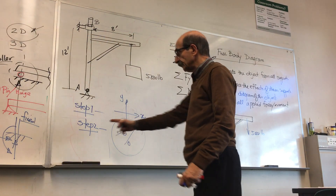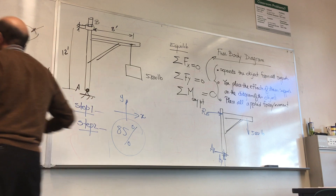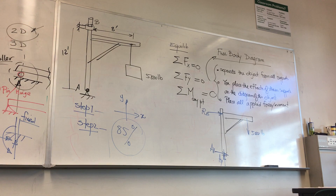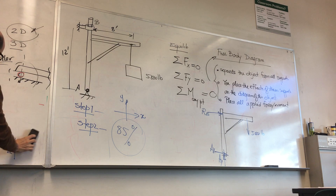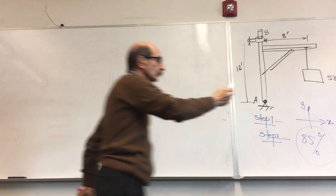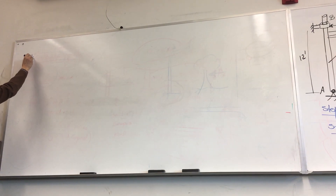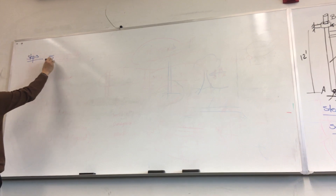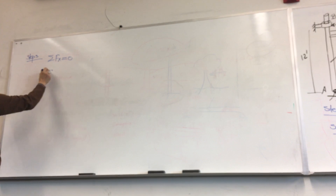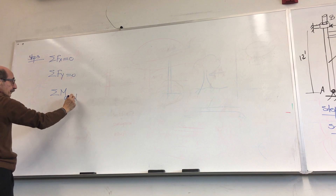Once you have the free body diagram — step two — then the final step leading to the objective is to write the equations of equilibrium: summation of forces along X is zero, summation of forces along Y is zero, summation of moments about any point is zero.